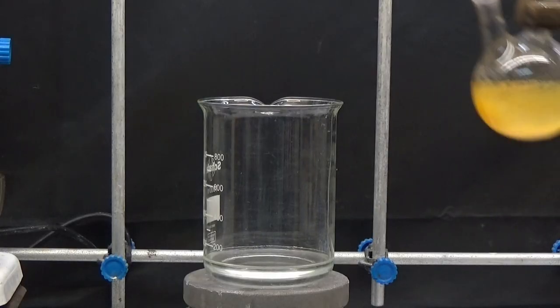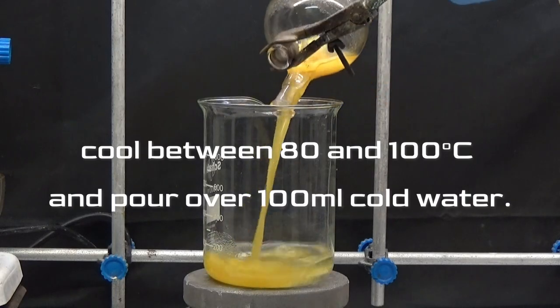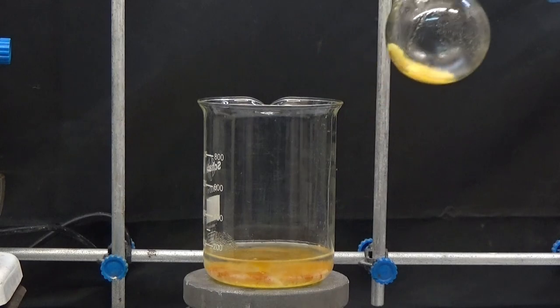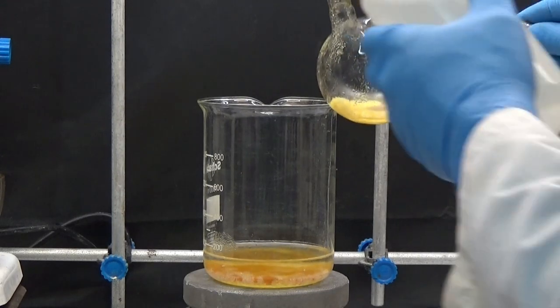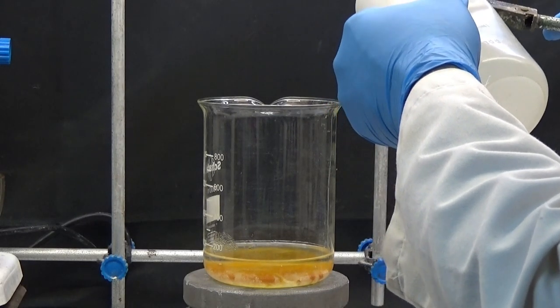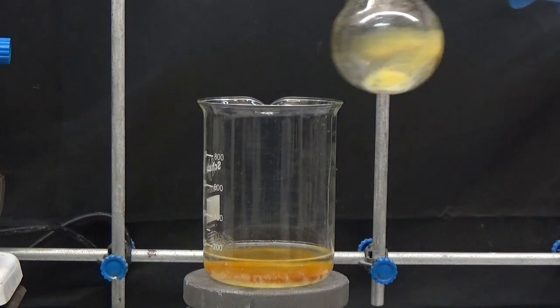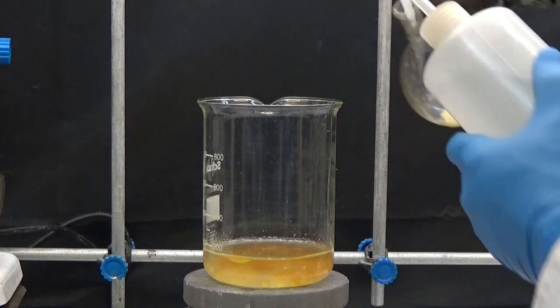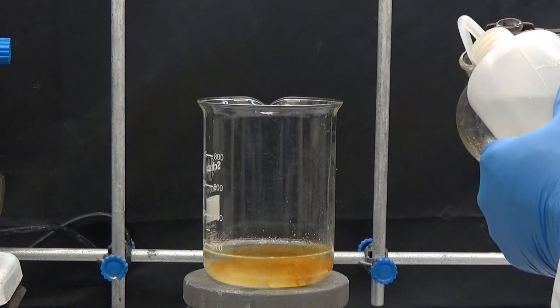After heating three hours, allow to cool and when the temperature is between 80 and 100 degrees, pour the contents of the flask over 100 milliliters of cold water in a 1000 milliliter beaker. Wash the reaction flask with water to drag all the contents.